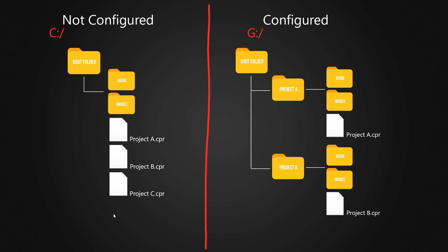On the left here we have Scenario A, which is an unconfigured library where the user hasn't paid attention to where things are being saved — their projects folder directory looks a little bit like this. On the right we have a configured library where the user has paid attention to how they're saving their projects and where things are going, so it's not going to cause them any issues.